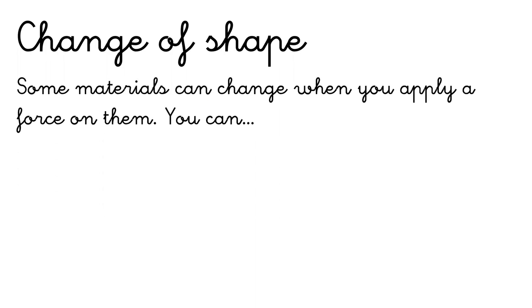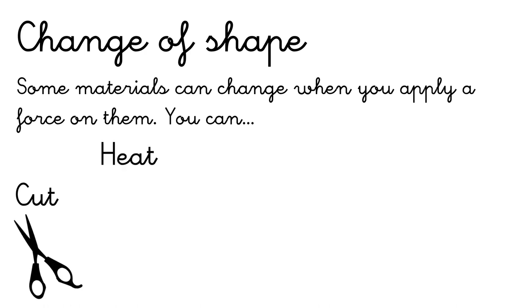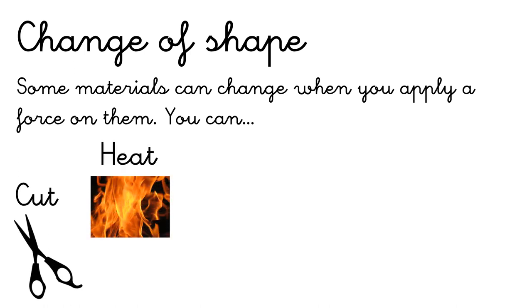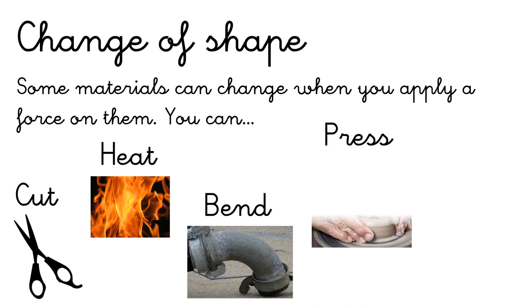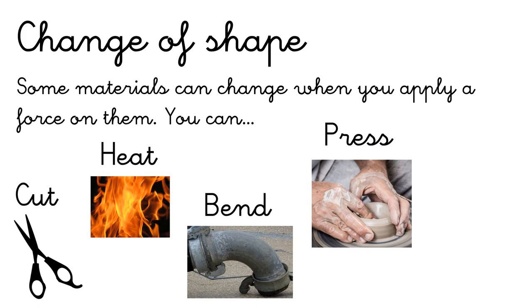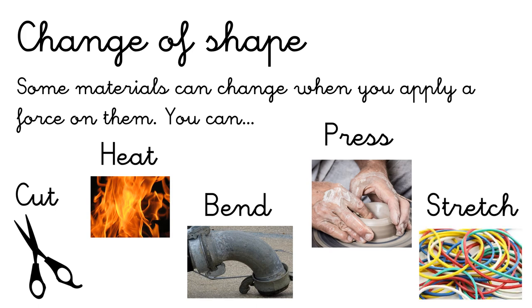Change of shape. Some materials can change when you apply a force on them. For example, you can cut a material, or heat it — for example, if you heat a bar of chocolate, you get liquid chocolate. You can also bend it, press it to modify the shape, or stretch it — for example, with rubber bands.